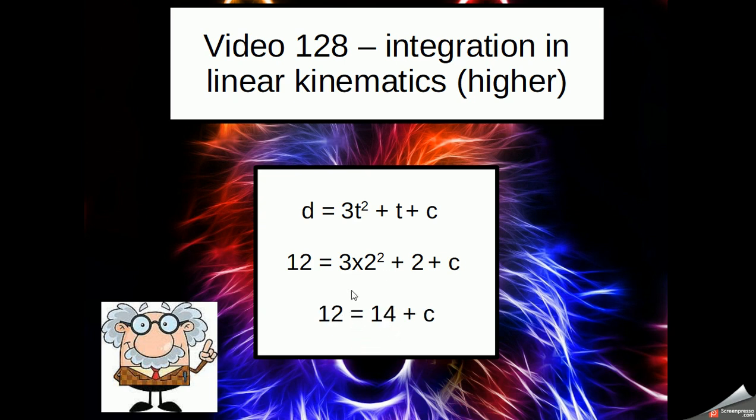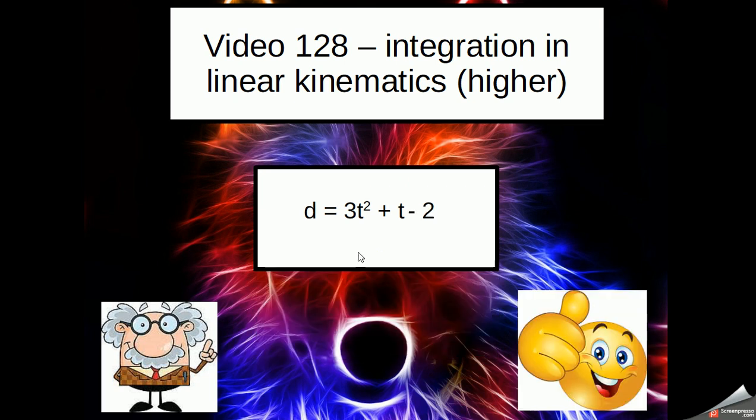I'm going to add the 2 together and move the 14 over to the other side of the equals, making it 12 take away 14, because the 14 becomes a negative. And my constant is minus 2. I can now change my equation to 3t squared plus t minus 2, and I've got back to the original displacement equation.